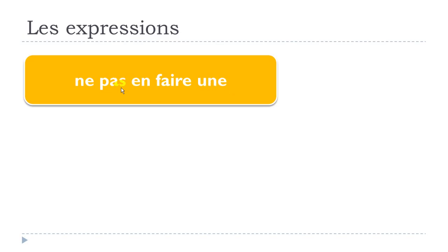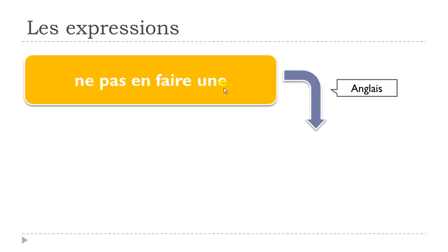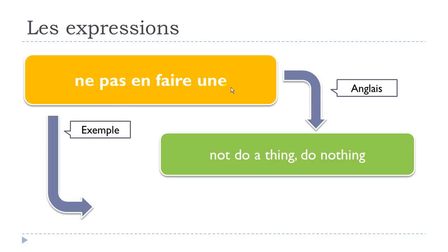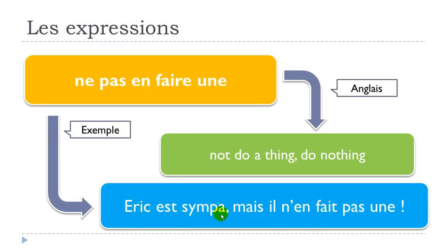Let's make the liaison here: ne pas en faire une. Here is the translation in English. And let's see one example: Eric est sympa mais il n'en fait pas une. Eric est sympa mais il n'en fait pas une.